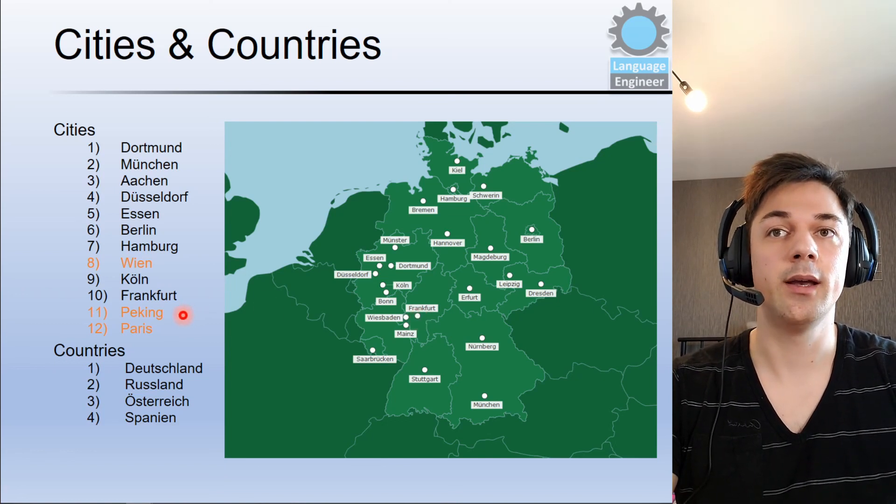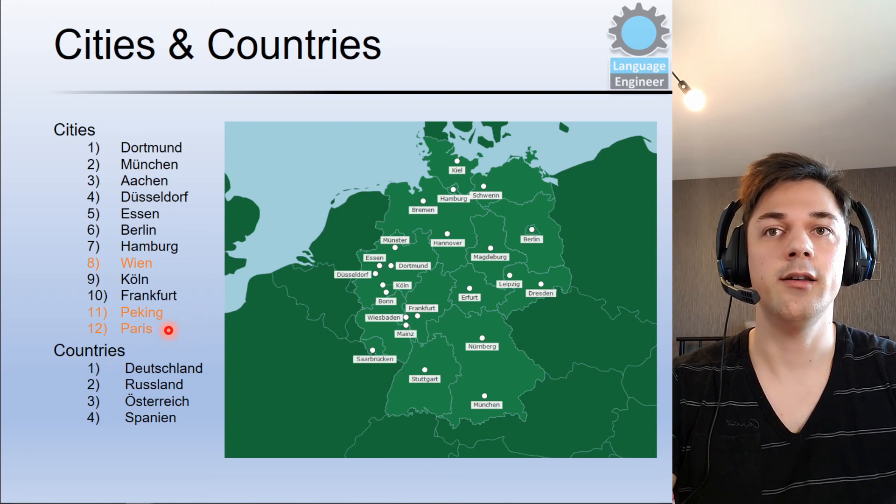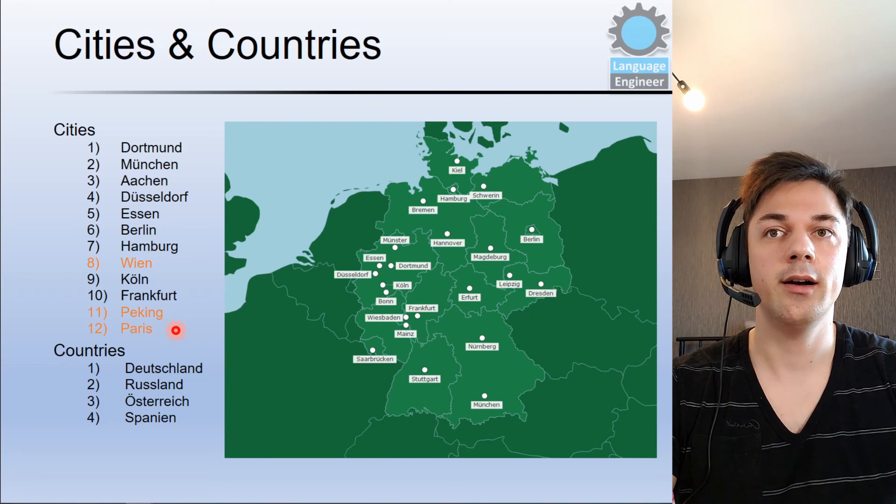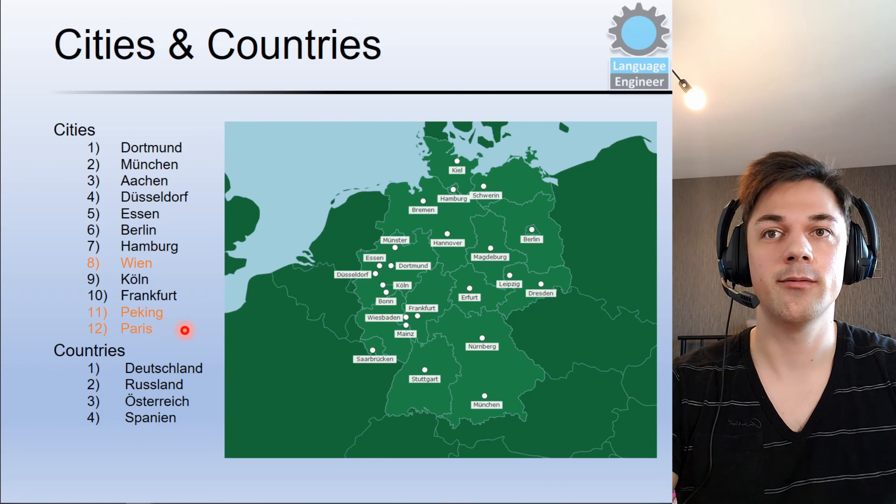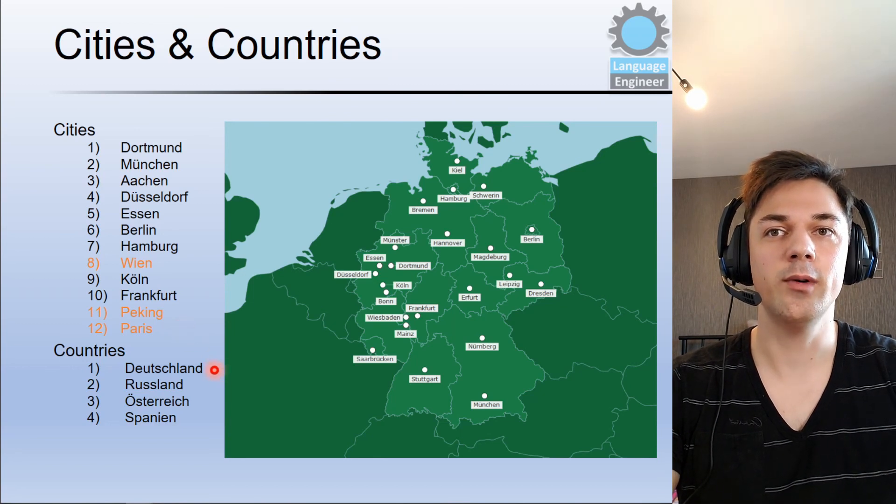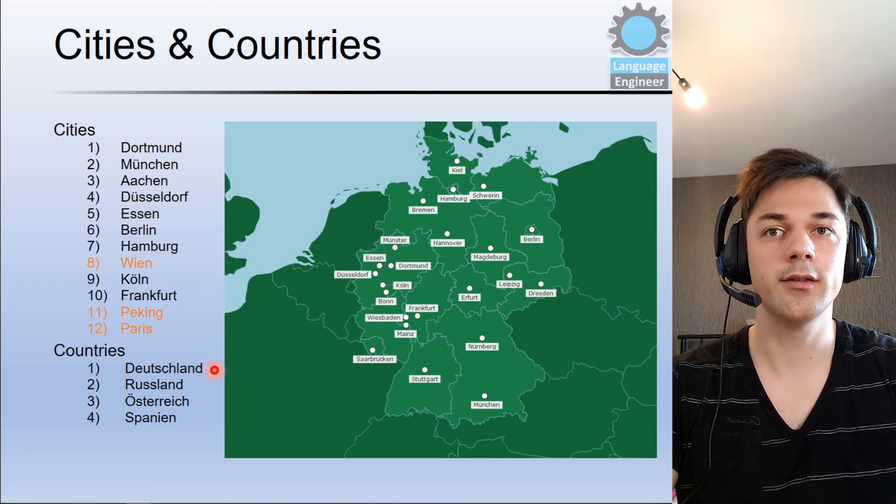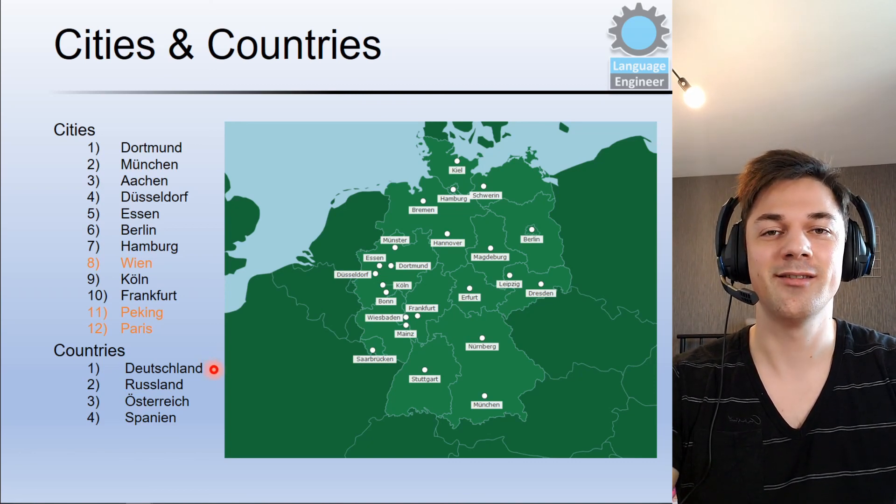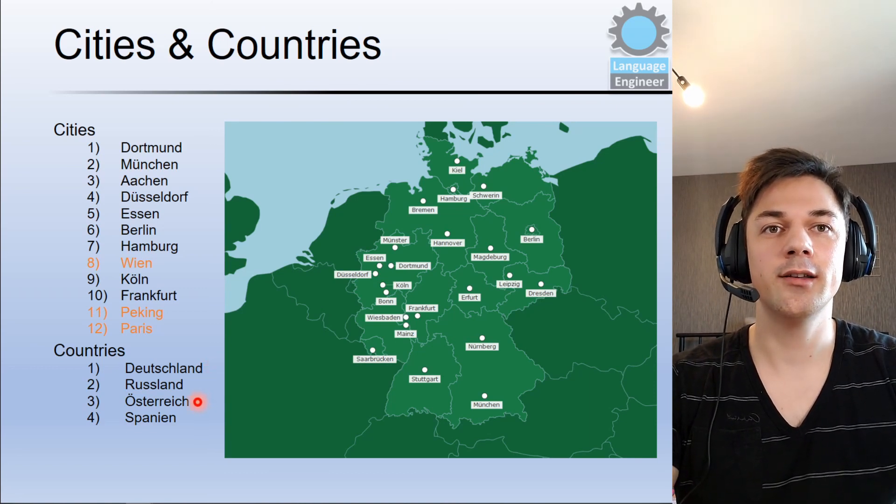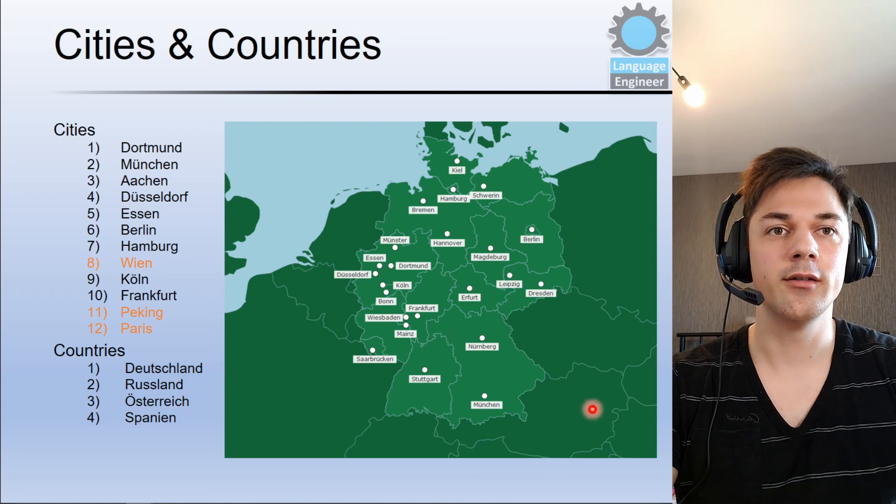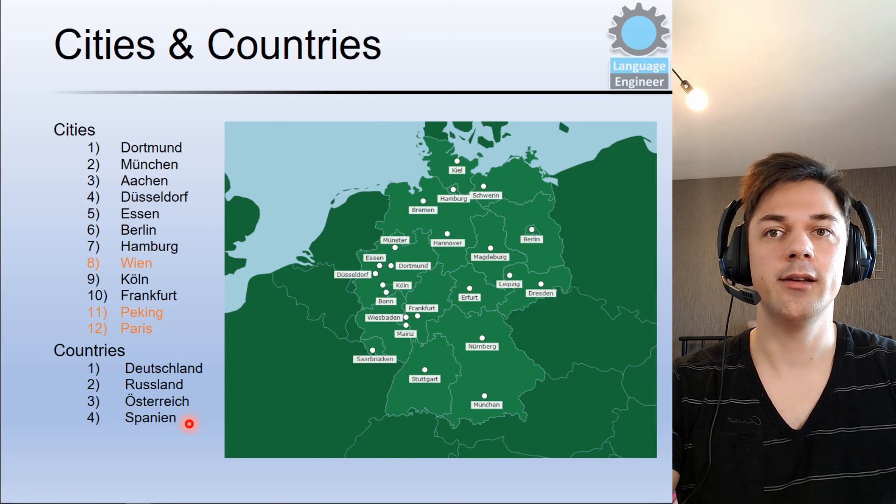Then Peking. Peking is Beijing, it's the capital city of China. Paris. And Paris is the capital city of France. And then we have some countries which we also use in lesson 3. These are, for example, Deutschland. You should know what it is, this is Germany. Russland is Russia. Österreich is Austria, it's here. Then we have Spanien, and this is Spain.